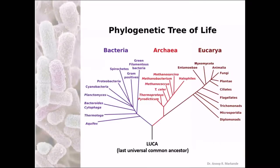We have already discussed about the three-domain classification of living systems. This is the phylogenetic tree of life. In this, bacteria, archaea, and eukarya are classified on the basis of their genetic material — mainly the 16S rDNA or 18S rDNA, that is conserved ribosomal rDNA. We came to know that there is a last universal common ancestor which is the progenitor for the whole living system on earth. In this module, we are going to discuss different sections of bacteria, or the domain Eubacteria.